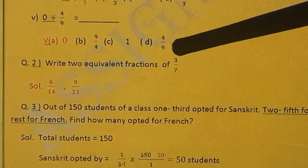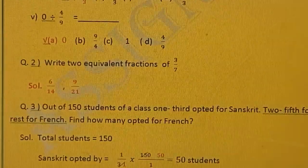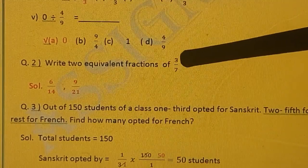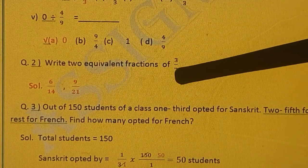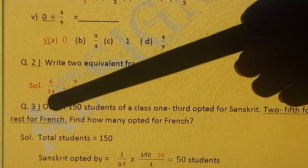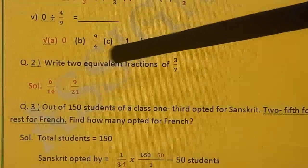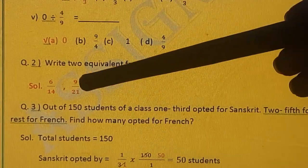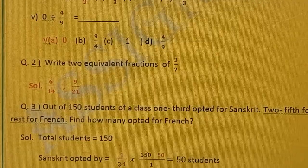Write two equivalent fractions of 3 upon 7. 3 upon 7, 3 multiply by 2, 7 multiply by 2, we will get 6 upon 14. 3 multiply by 3, 7 multiply by 3. So we are getting 9 upon 21.